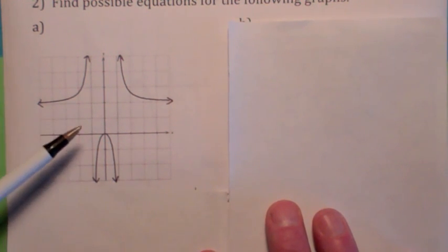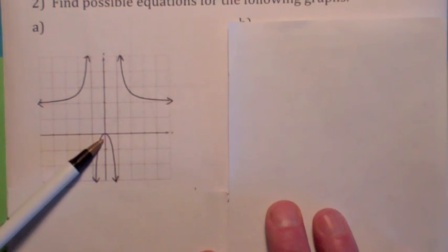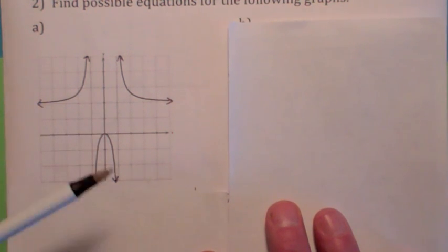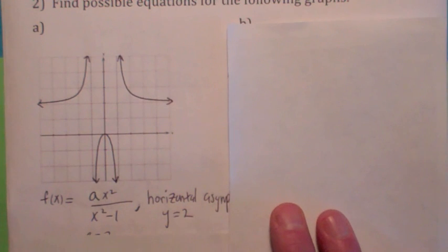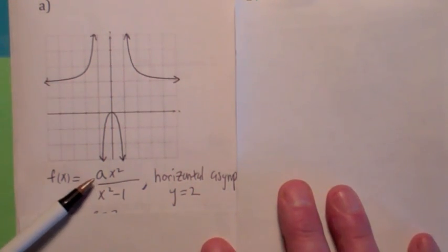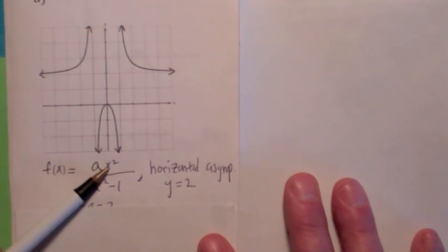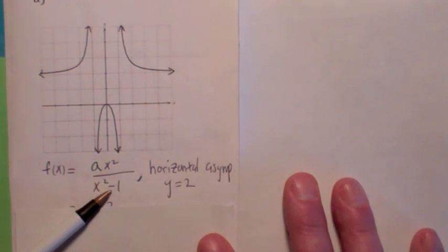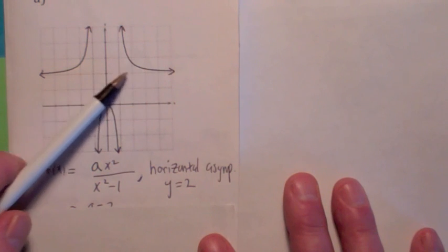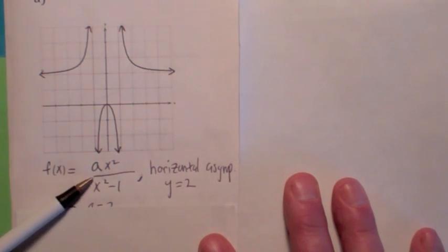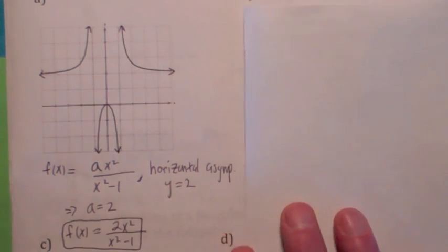We've got a rational function. It looks like we have a zero at zero multiplicity 2, so that might be an x squared on the top. It looks like you've got vertical asymptotes at plus or minus 1 with odd multiplicity, so I'm thinking you're going to have an x minus 1 times an x plus 1 on the bottom. Don't forget about the coefficient a — we want to find out what a will have to be. If you look at the horizontal asymptote, it has to be 2. So to make the horizontal asymptote 2, how about if a equals 2? That would work.